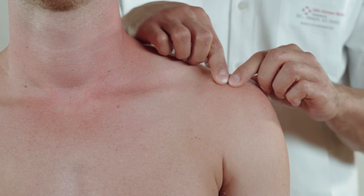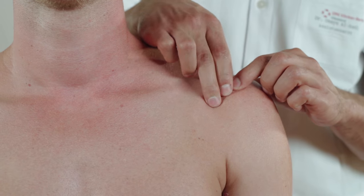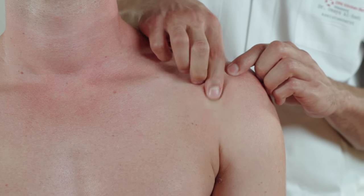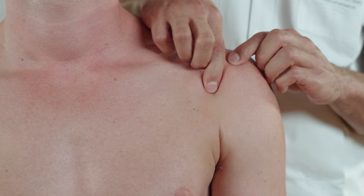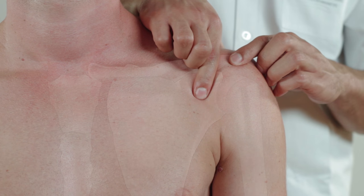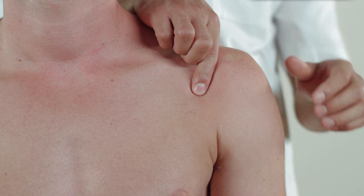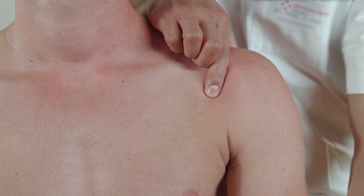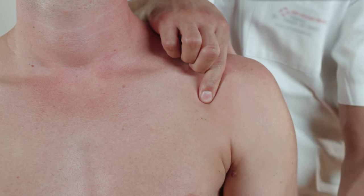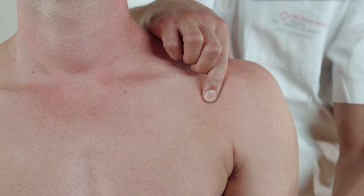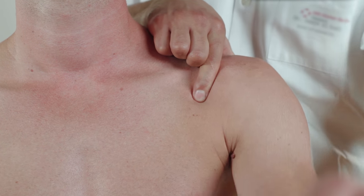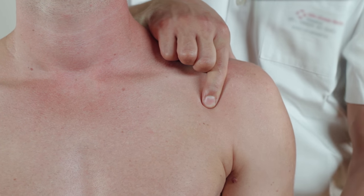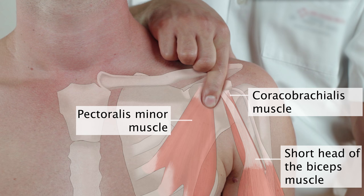From here, palpate the coracoid process of the scapula in the infraclavicular fossa. The process can be located as it moves with the scapula while the arm is flexed forward. Pain in this area can indicate an insertional tendinopathy of the short head of the biceps, of the pectoralis minor muscle, or the coracobrachialis muscle.